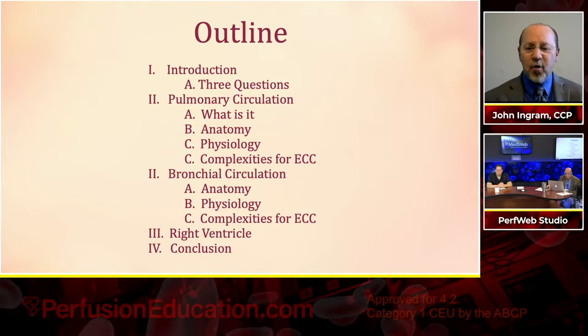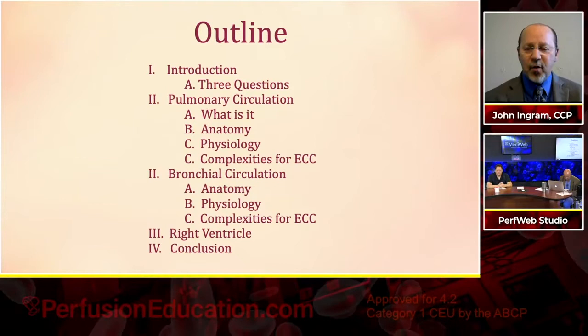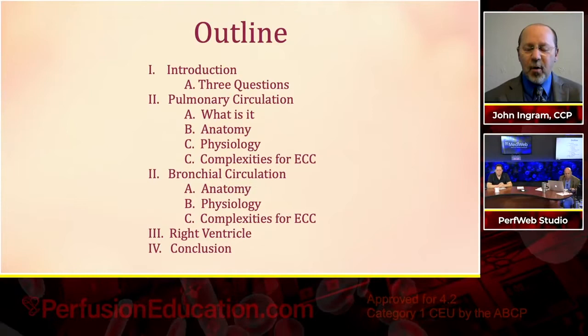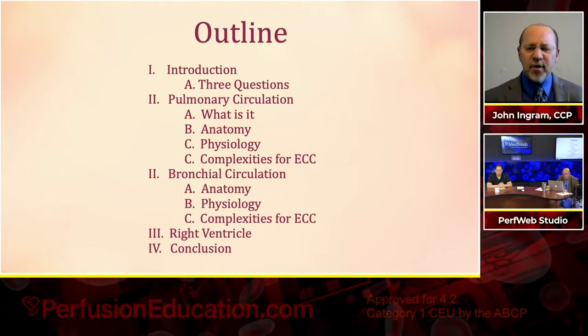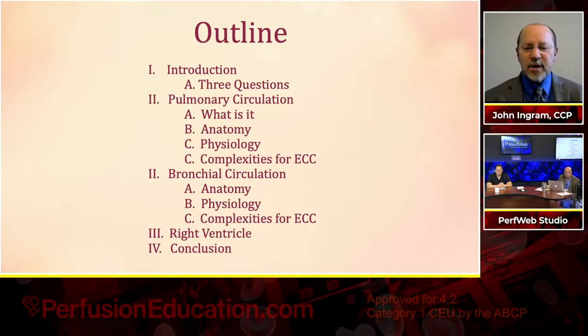First, I'm going to hit the pulmonary circulation — the anatomy of it, the physiology of it, and some of the complexities it offers us when we do extracorporeal circulation. Then I'm going to do the same for bronchial circulation — anatomy, physiology, and complexities. Then I'll talk about the right ventricle. And then we're going to bring it all together, answer those questions from the introduction, and try to have some nice conversation at the end.